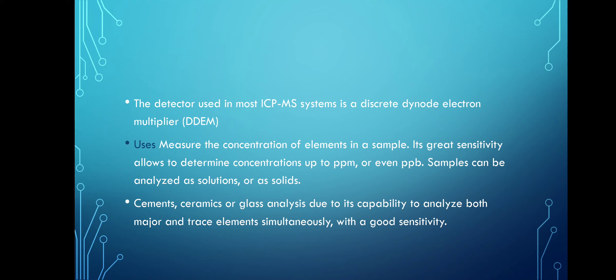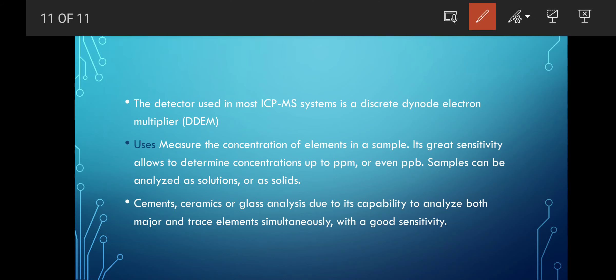The detector used here is mostly known as DDEM detector, or its full form is discrete dynode electron multiplier. It is used in forensic science and other fields for finding concentration. This detector has great sensitivity which allows us to determine concentration up to PPM or even PPP values.